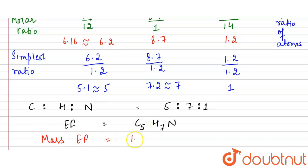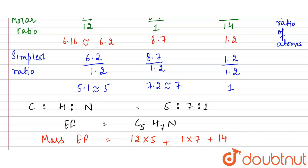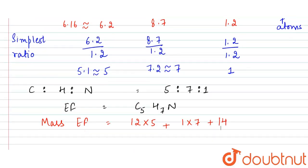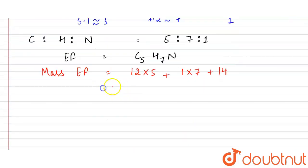Now we calculate the empirical formula mass: carbon contributes 12 × 5 = 60, hydrogen contributes 1 × 7 = 7, and nitrogen contributes 14 × 1 = 14. So the empirical formula mass is 60 + 7 + 14 = 81.